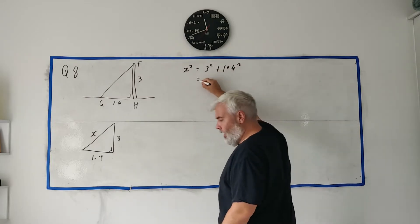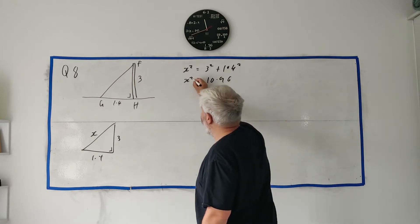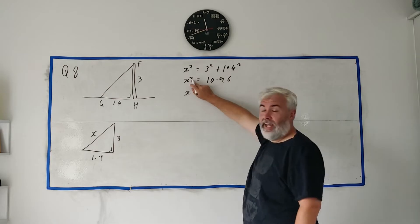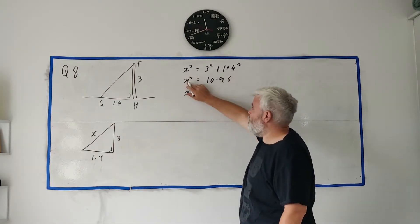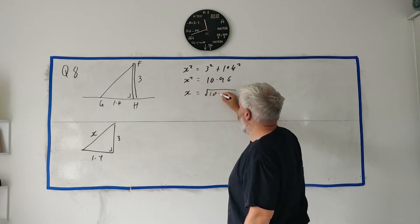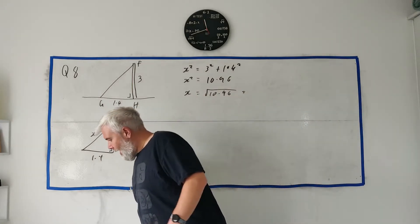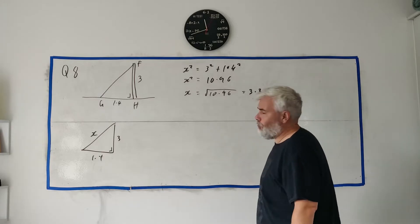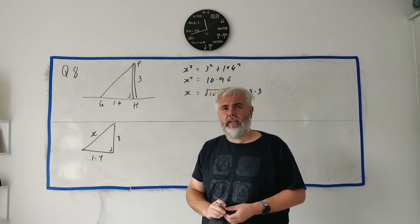If you put that into a calculator you get 10.96 - that's X squared. But we want X, so we need to take the square root of both sides. The square root of X squared is X, and the square root of the other side is 3.3, rounded to one decimal place. That's the answer to part one.